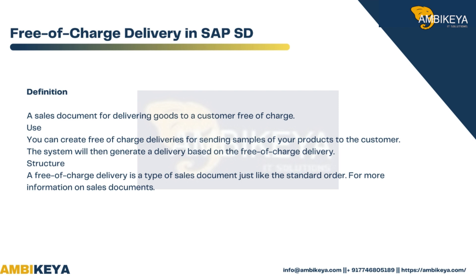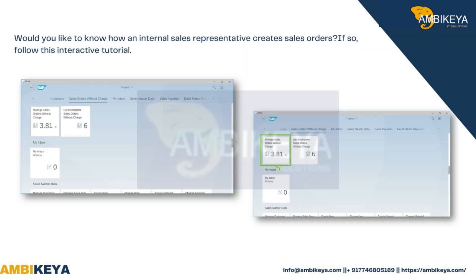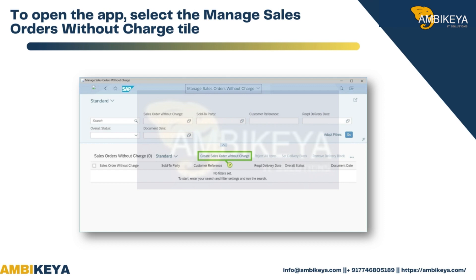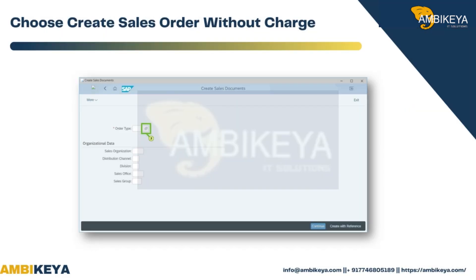The system will then generate a delivery based on the free of charge delivery structure. A free of charge delivery is a type of sales document just like the standard order. To see how an internal sales representative creates sales orders, follow this interactive tutorial. To open the app, select the Manage Sales Orders Without Charge tile.